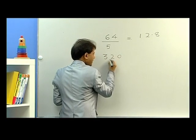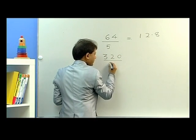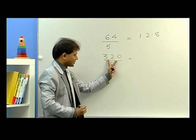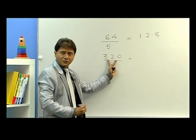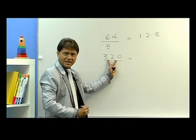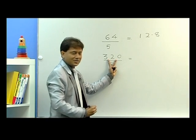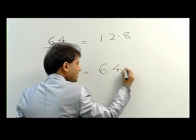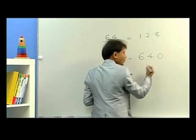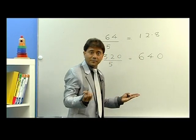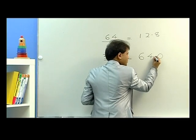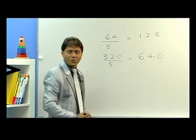Let's take another one: 320 divided by 5. As I told you, just double this. What is double of 320? 640. And now divide by 10, which means you just put a decimal point here, so you get the answer: 64.